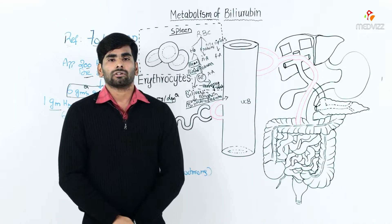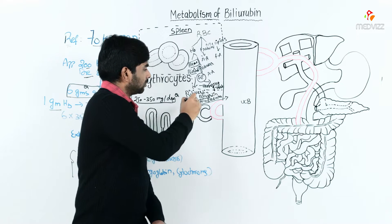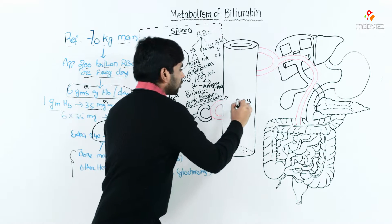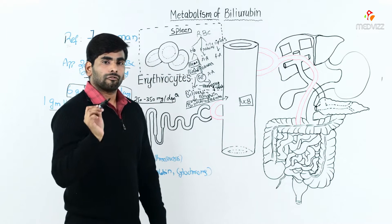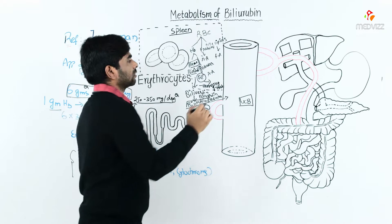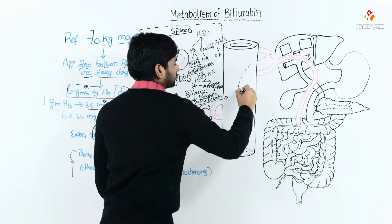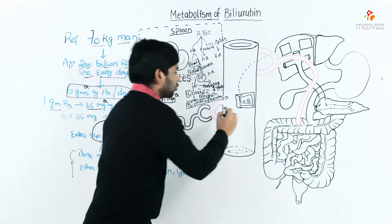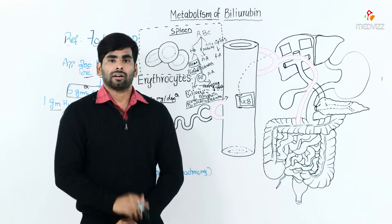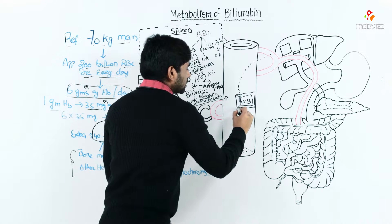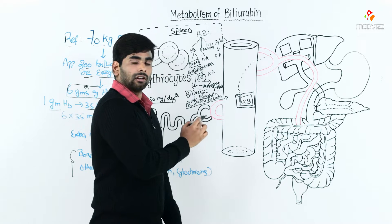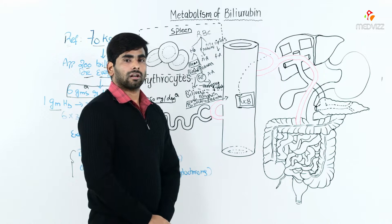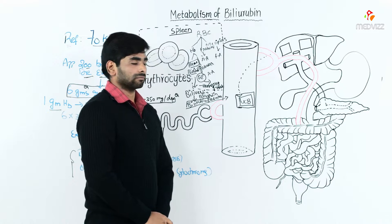The secreted bilirubin enters into circulation as unconjugated bilirubin. Unconjugated bilirubin is a very small molecule with a tendency to escape into the microcirculation and other tissues. To prevent this, special plasma proteins are released from the liver into the circulation, where they travel and bind with this unconjugated bilirubin, forming a large complex that cannot easily diffuse back into the microcirculation or get filtered.